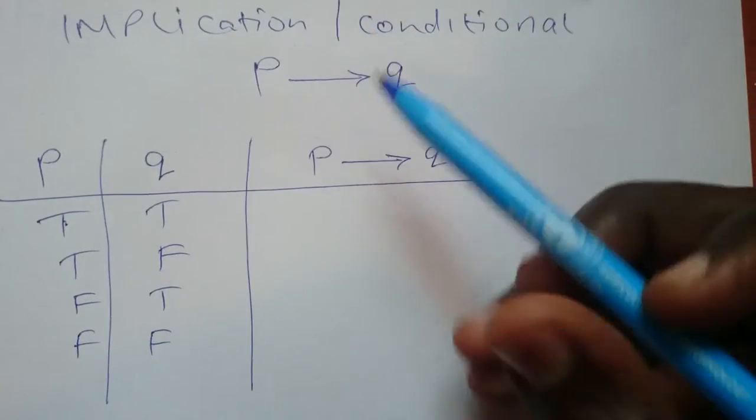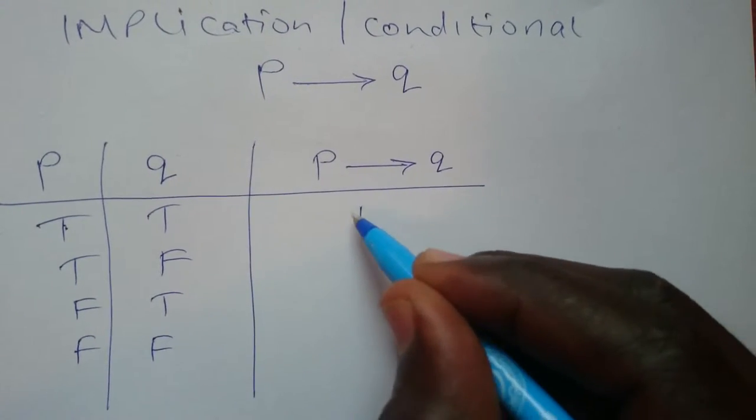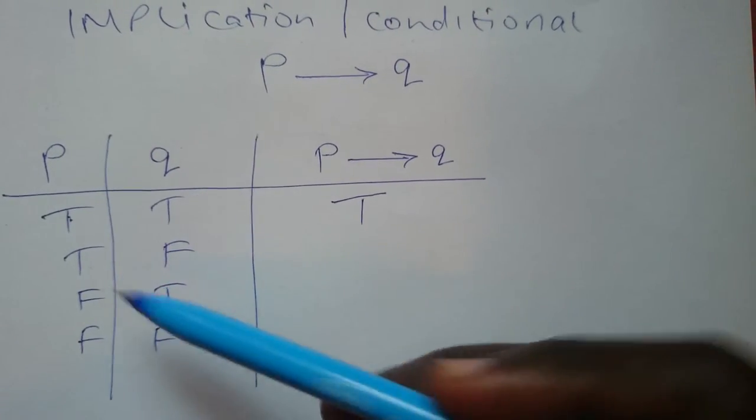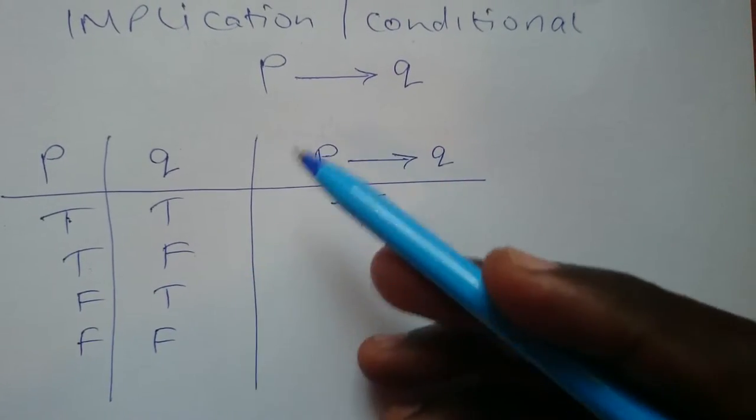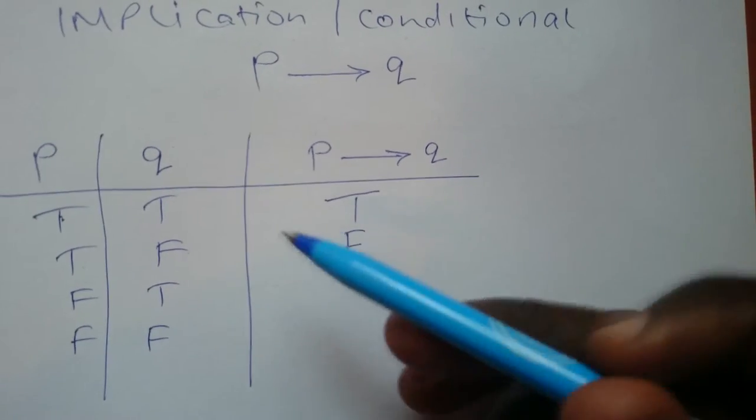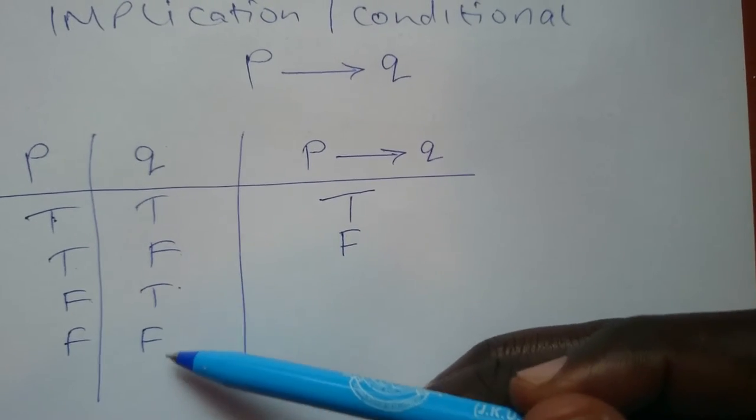Implying a true statement, as we have seen above, this is true. In the second case we have a true statement implying a false statement, in which case it is false. Now any false statement implying either true or false will still be true.